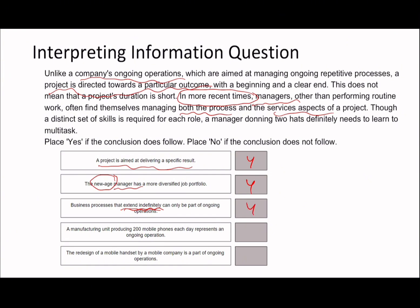Fourth: 'A manufacturing unit producing 200 mobile phones each day represents an ongoing operation.' They've given you information and you have to apply your knowledge of ongoing operations — it's an ongoing repetitive process. Producing 200 mobile phones a day sounds like an ongoing repetitive process, so I would agree with this. And lastly: 'The redesign of a mobile handset by a mobile company is part of ongoing operations.' If you're redesigning something, the start is the old phone and the end is the new phone. You don't keep constantly redesigning it — you make one redesign and call it there. So I would say this is no — this is going to be a project, because it does have a beginning and an end.